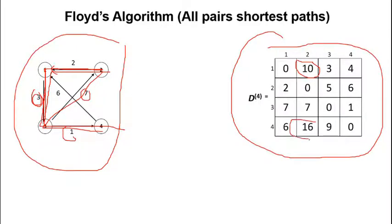For the value sixteen — how did we get sixteen? For path four to two: we go four to one, which is six, then one to three, which is three, then three to two, which is seven. So six plus three equals nine, and nine plus seven equals sixteen. That is how we get sixteen.